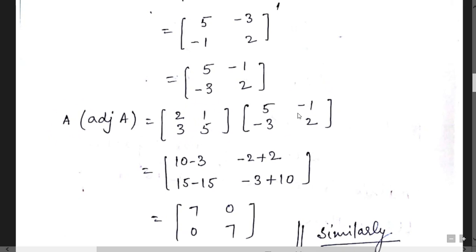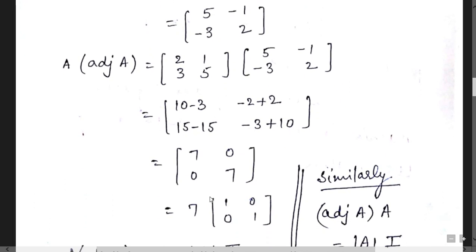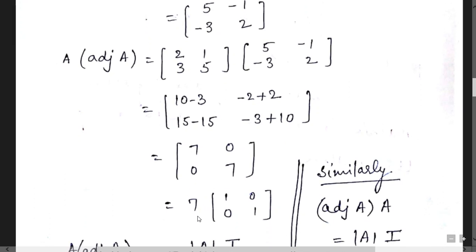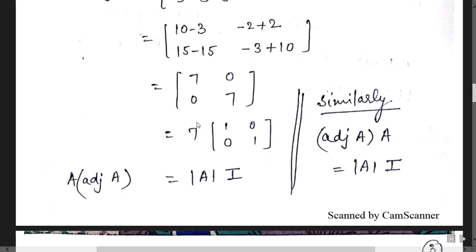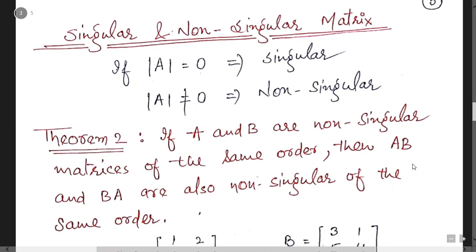Now multiply A, which is [2, 1; 3, 5], with the adjoint [5, minus 1; minus 3, 2]. Computing: 2×5 = 10, 1×(minus 3) = minus 3, 2×(minus 1), 1×2 — using standard matrix multiplication. The result is [7, 0; 0, 7]. Taking 7 as common, this equals 7×[1, 0; 0, 1], so A × adj(A) = det(A) × I. Similarly, adj(A) × A also equals det(A) × I.